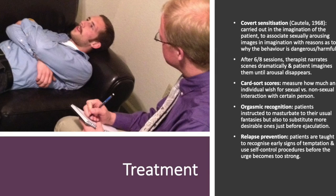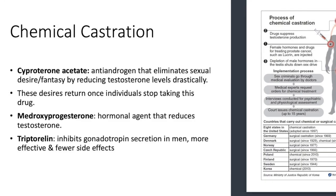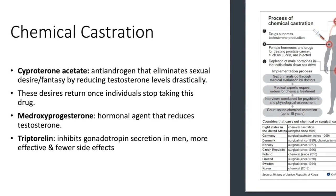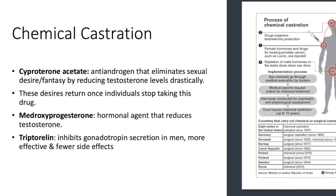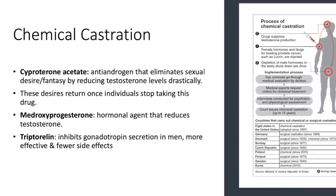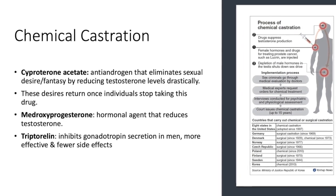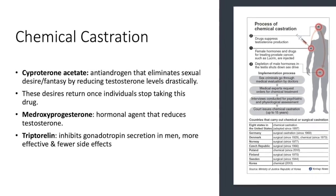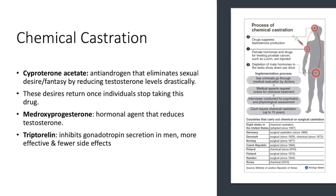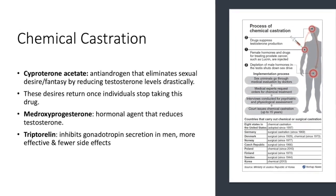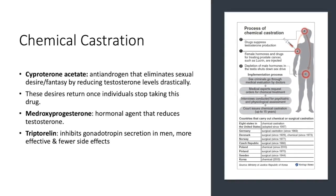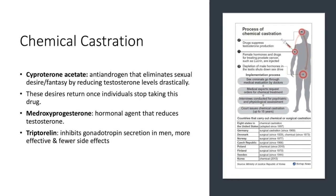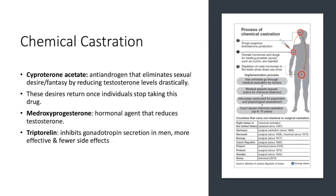If psychological or behavioral methods do not work, there is the chemical option — chemical castration. Cyproterone acetate is an anti-androgen that eliminates sexual desire and fantasy by drastically reducing testosterone levels, though desires return when individuals stop taking the drug. Other drugs include medroxyprogesterone, a hormonal agent that reduces testosterone, and triptorelin, which inhibits gonadotropin secretion in men and is considered more effective with fewer side effects.